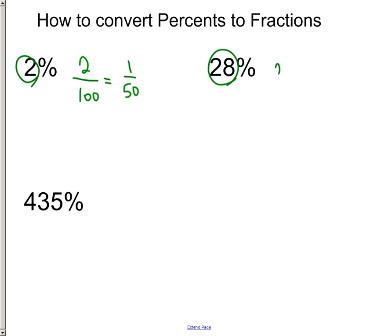The 28%, you'd set that right over 100. Next thing you know, that would, let's see, divide that by 4. That would become 7 25ths.